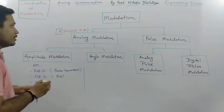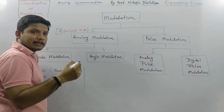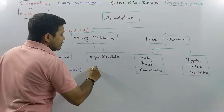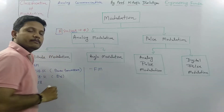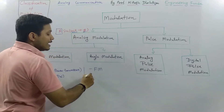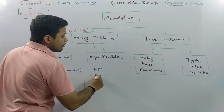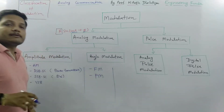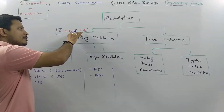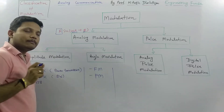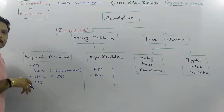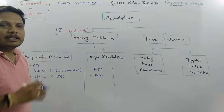The second technique of analog modulation is angle modulation. In angle modulation, we can use two different techniques. One is to change the frequency, giving us frequency modulation — FM. In the second technique, we change φ (phi), which is noted as phase modulation — PM. I will explain these two techniques in future videos in detail. So in angle modulation there are two techniques: frequency modulation and phase modulation.